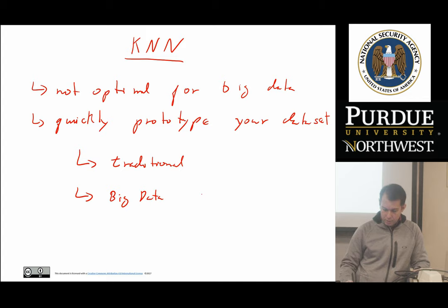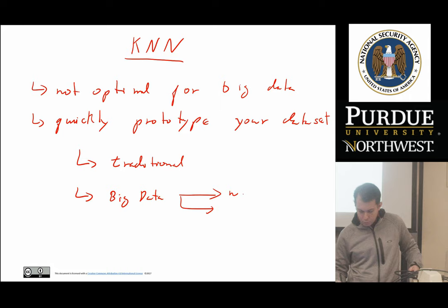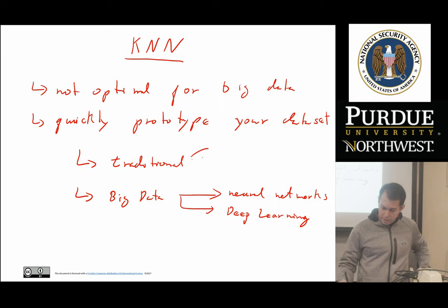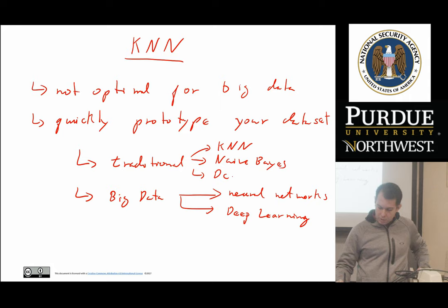Just to remind the students, we're dividing machine learning algorithms into two categories. One is what I'm calling the traditional machine learning algorithms, and then we have the big data algorithms — the more advanced ones. The big data algorithms are neural networks, and in particular things like deep learning. Whereas the traditional algorithms include KNN, Naive Bayes, and decision trees.